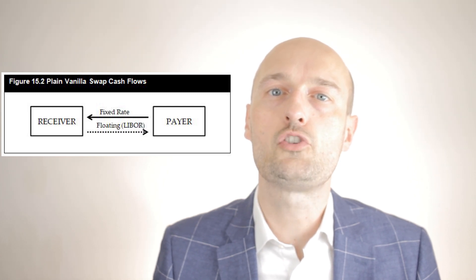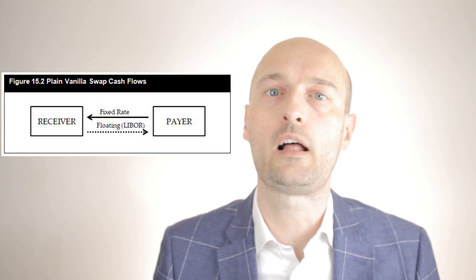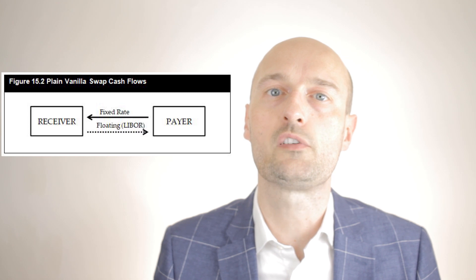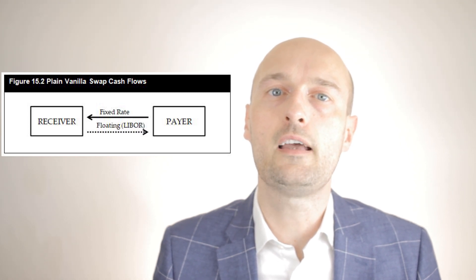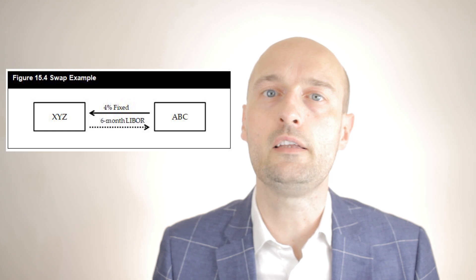The most common type of swap is a plain vanilla interest rate swap, which involves one counterparty paying a fixed rate to another while receiving a floating rate indexed to a reference rate like LIBOR. By market convention, the counterparty paying the fixed rate is the payer and the counterparty receiving the fixed rate is the receiver. The notional principle is not actually transferred — it's the basis for calculations. In order for a swap to be valued at zero at inception, the present value of both legs must be equal.